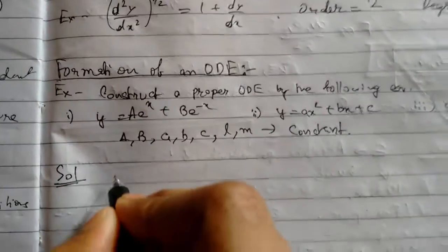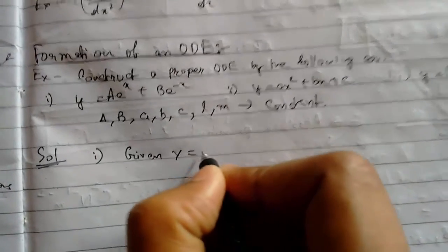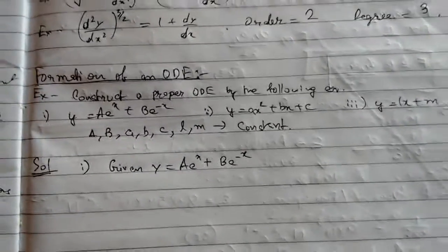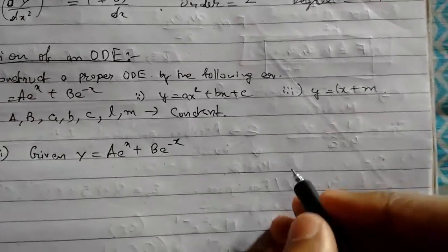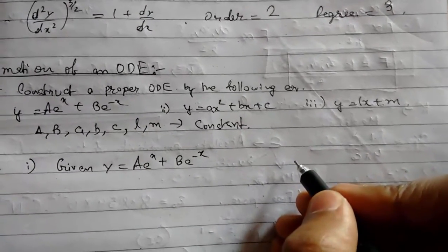So we see that for equation one, given y = ae^x + be^(-x), we need to do something. I will write here all the steps or important points that must be kept in mind during the formation of an equation.